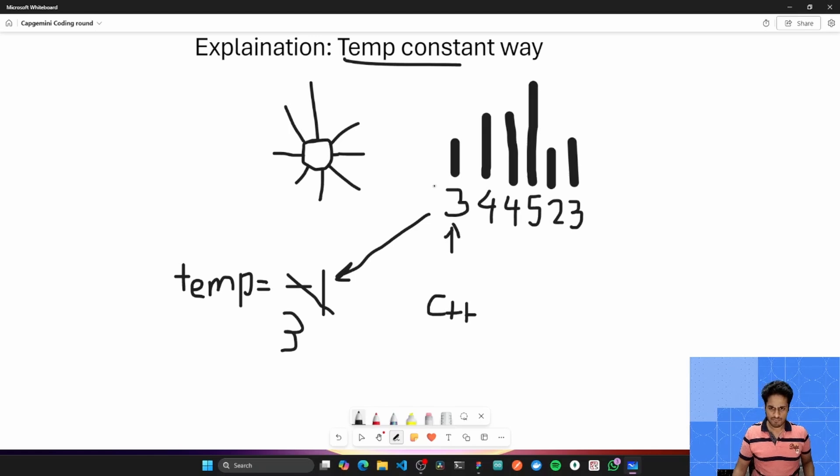So this way, when it comes across 3, its value gets updated to 3, and the count becomes from 0 to 1. Then we come to 4. 4 is greater than 3, we update this value to 4, and the count becomes 2. Now this 4 is not greater than 4, we do nothing, we move on. This 5 is greater than 4, so its temp's value becomes 5, and the count's value becomes 3. 2 is not greater than 5, 3 is not greater than 5. That's the end of it.